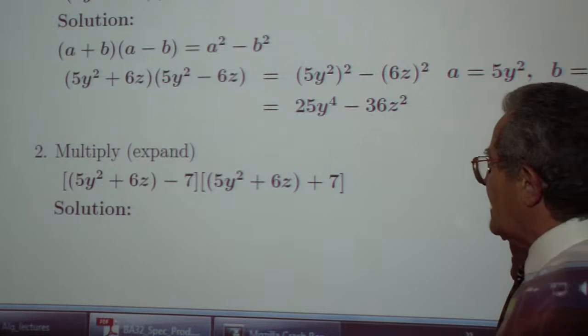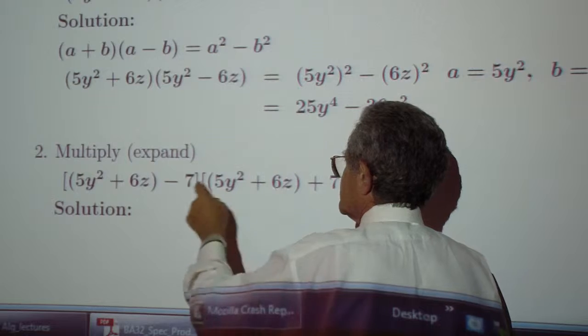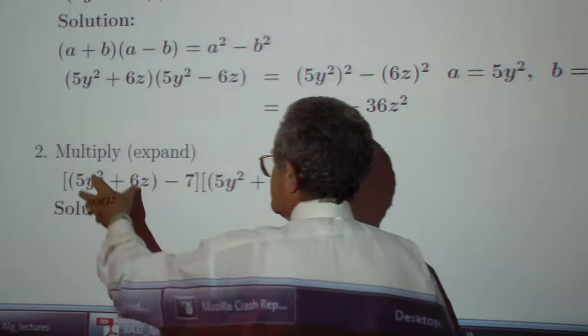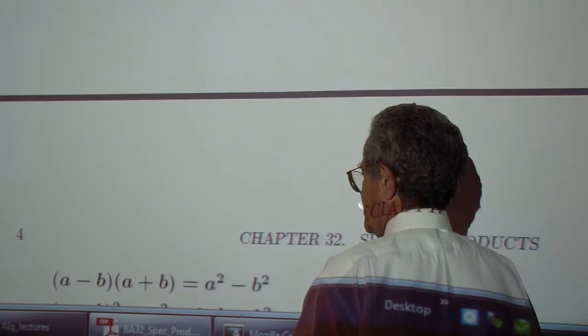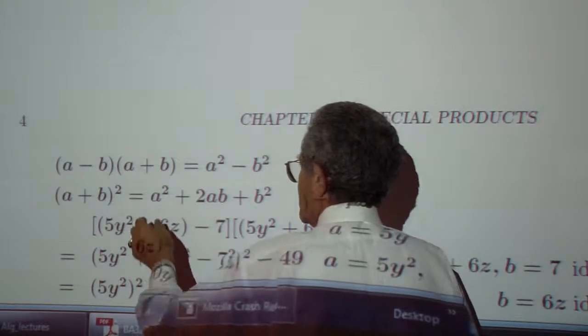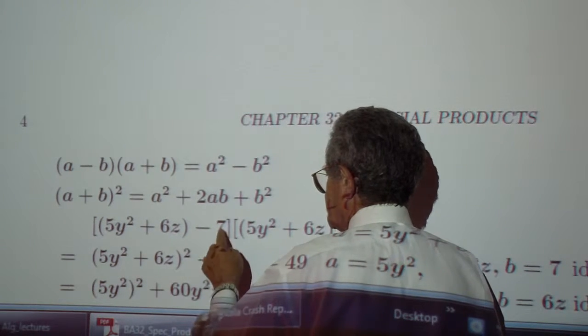You have again, a, a, minus and plus b, which gives you a squared minus b squared. So that gives you a squared minus b squared.